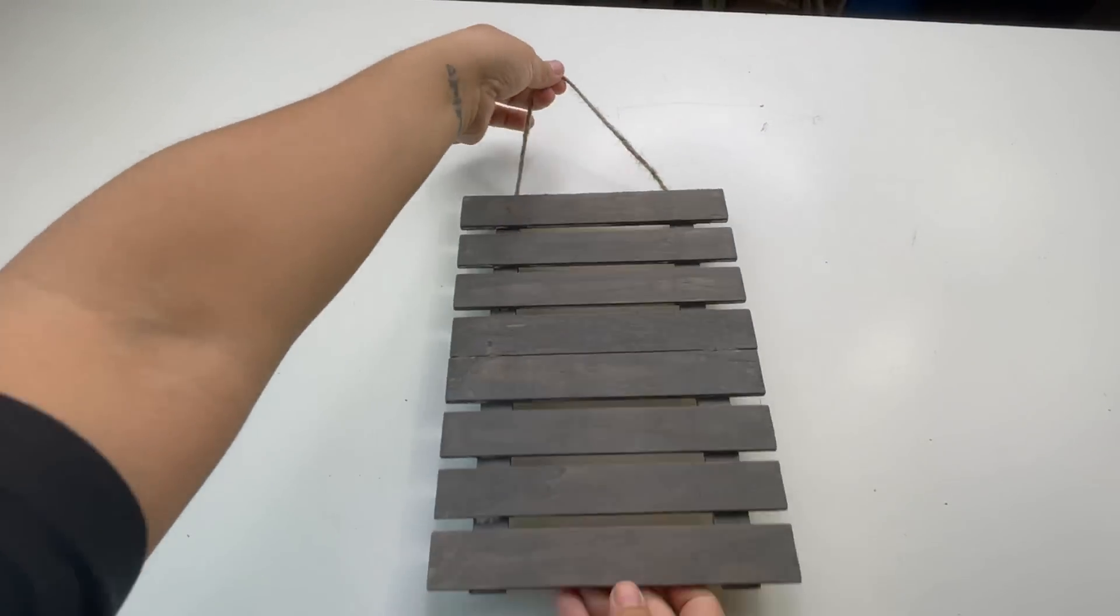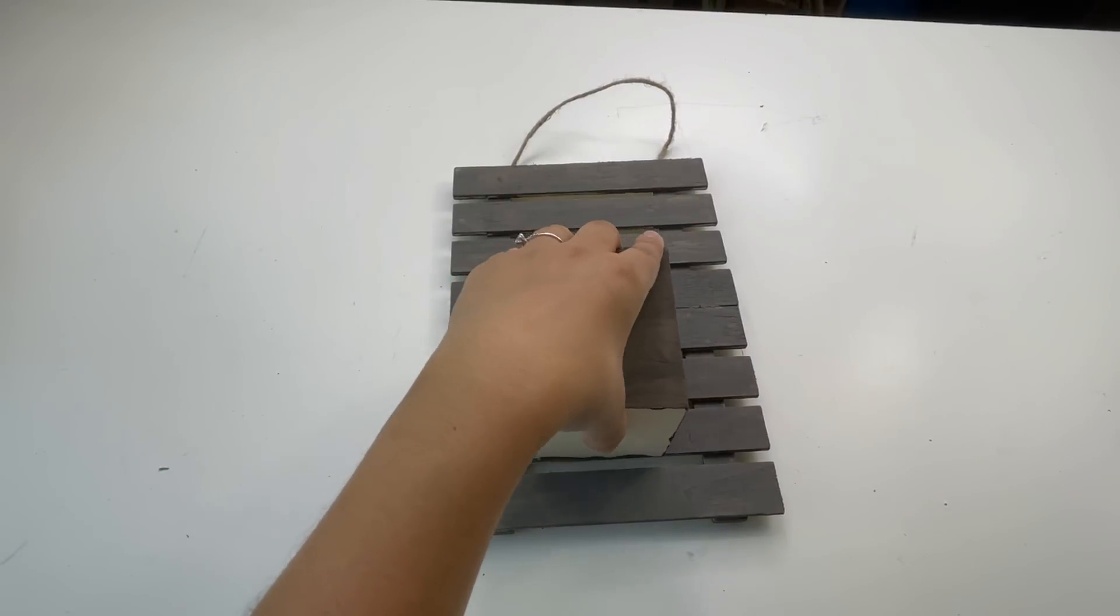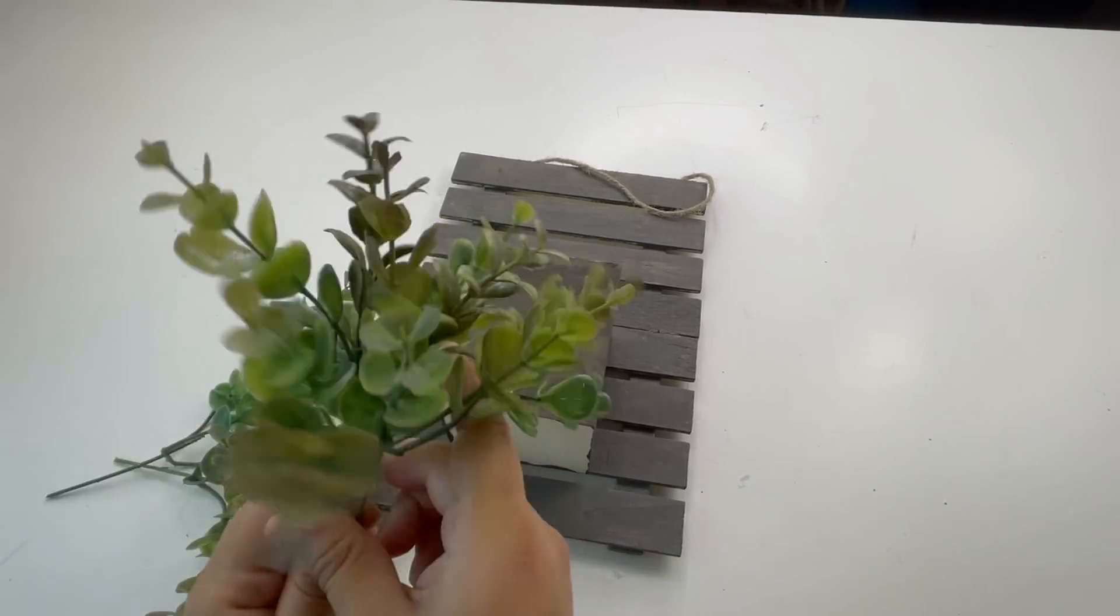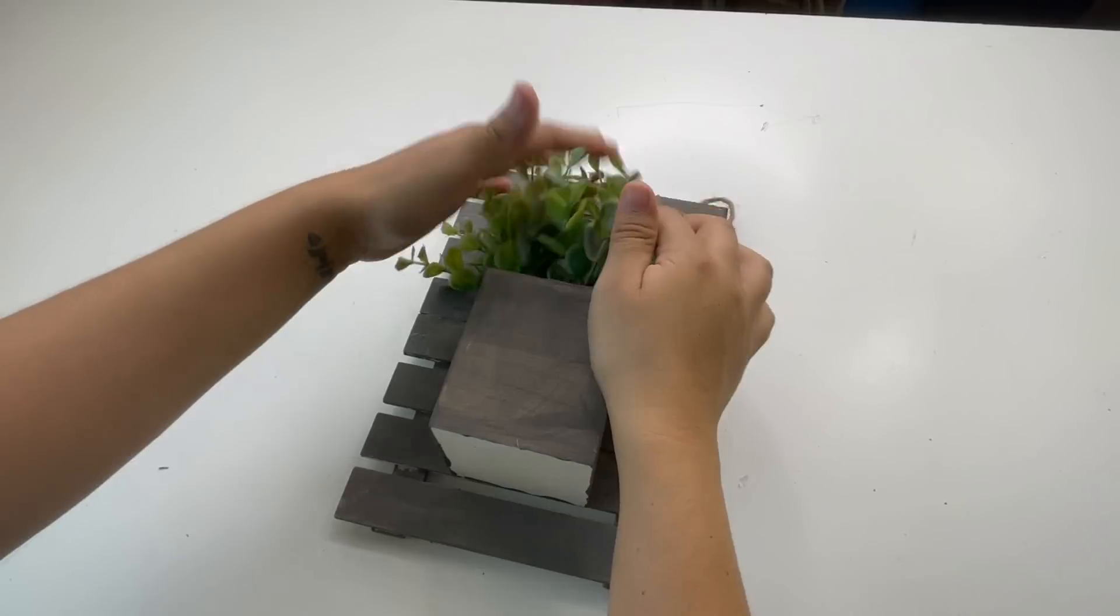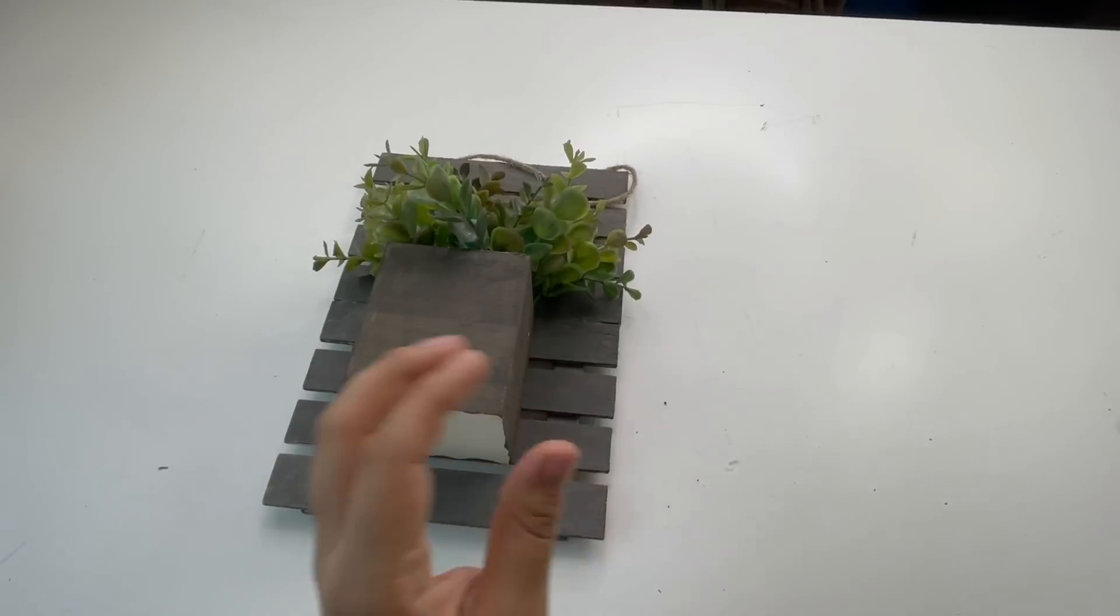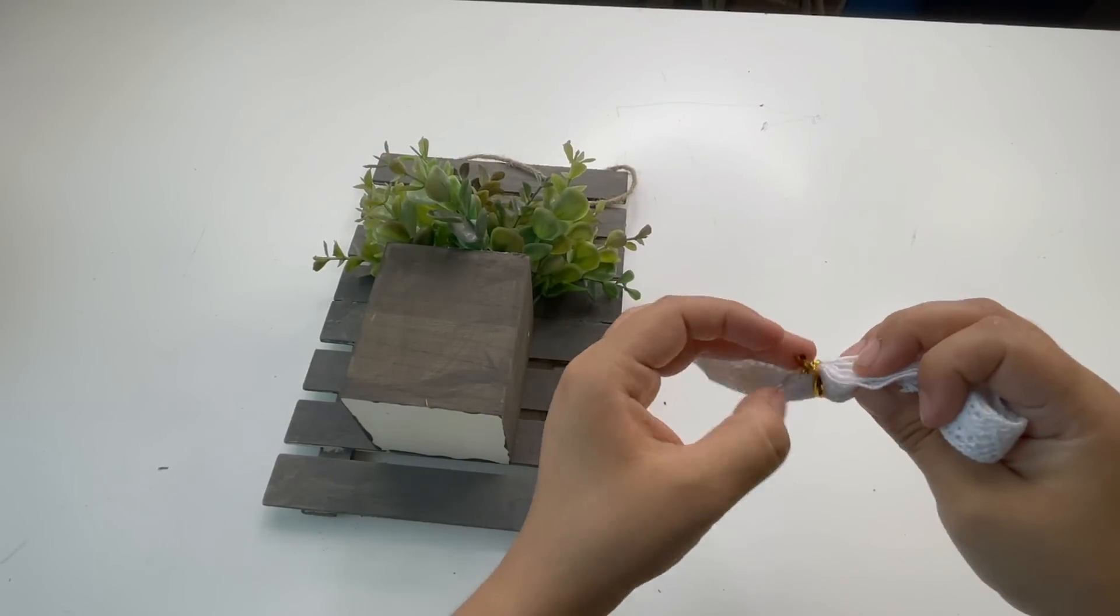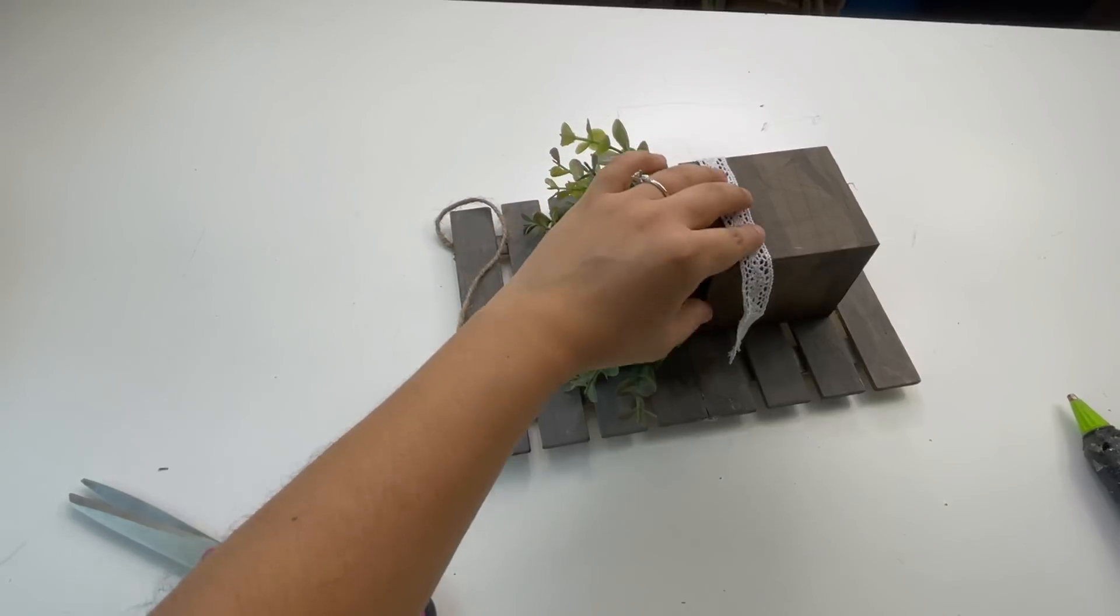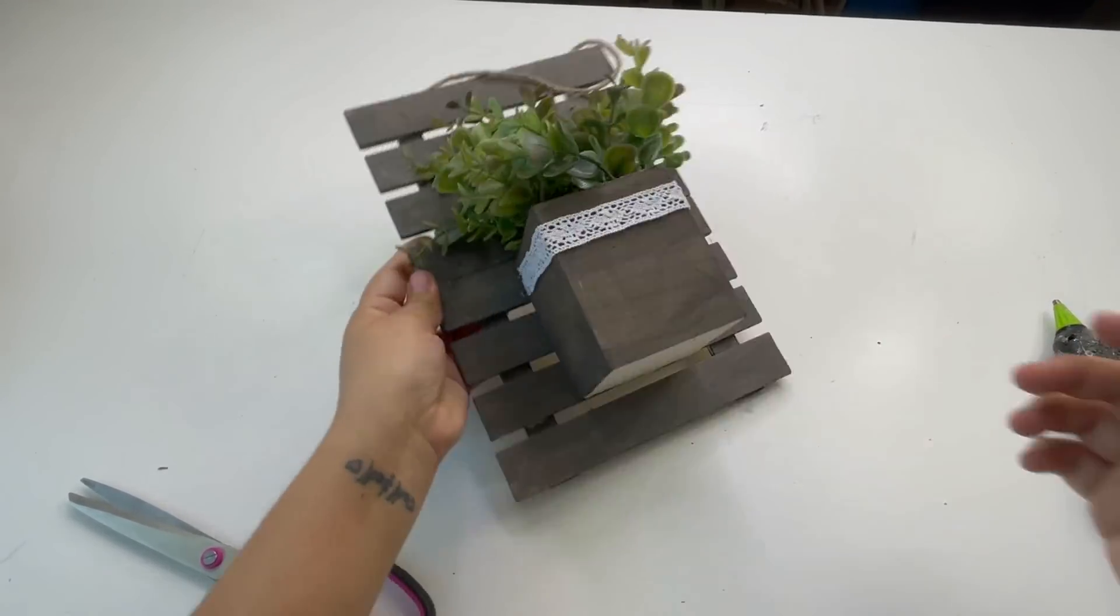Option two will be the wall decor, so you will remove one of the strings and then add like a little planter. The one I'm using is this pencil holder that I already had that I painted the same color. All I did was just glue it and add some greenery. Now to decorate the planter a little more, I decided to use this new Dollar Tree lace and just add it around it. And that is it for this wall decor.